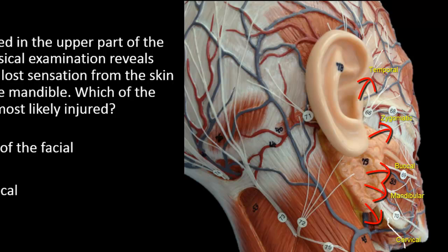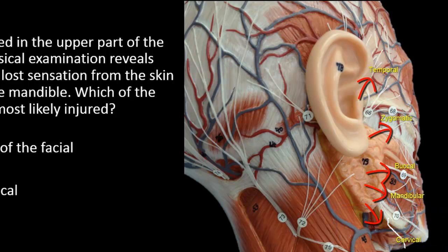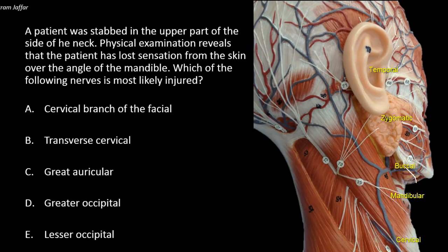All these branches are motor to the muscles of facial expression. The first four branches are confined to the face, but the cervical branch descends into the neck to supply the platysma muscle, a muscle of facial expression. This nerve is thus motor and not sensory.